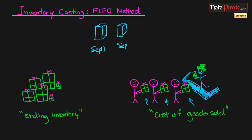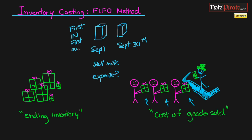That second purchase is going to be on September the 30th. If we sell some milk, which inventory are we going to expense first? It all depends on which came in first, because the first inventory that comes in is the first inventory that is going to go out — or be expensed. So it's going to be our September 1st inventory, since that is our oldest inventory.